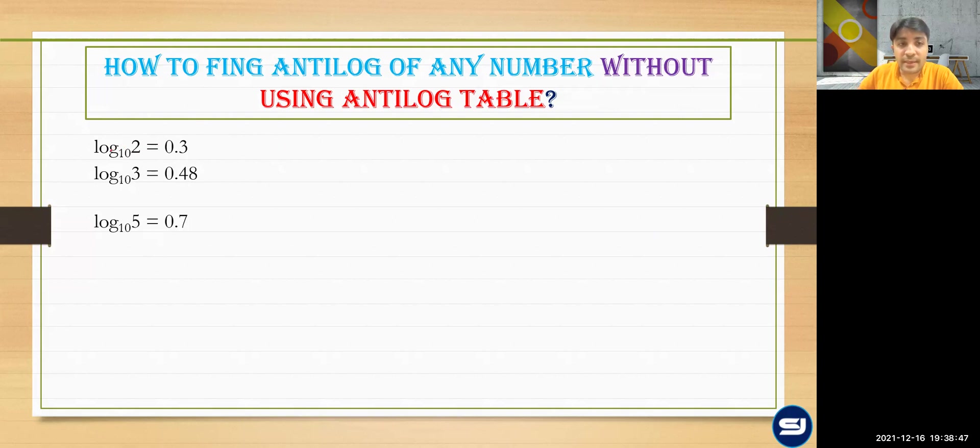Now, if I just take the antilog on both the sides, then can I say that two will be equal to the antilog of 0.3. If I take antilog on both the sides, then the antilog value of 0.3 is equal to two. Similarly, the antilog of 0.48 will be equal to three and antilog of 0.7 will be equal to five.